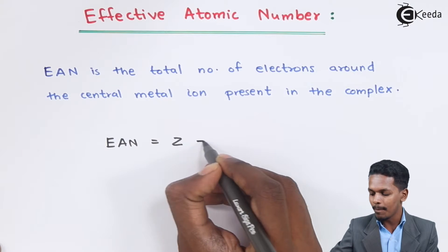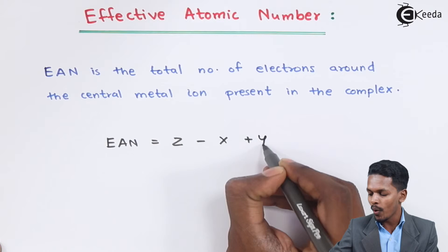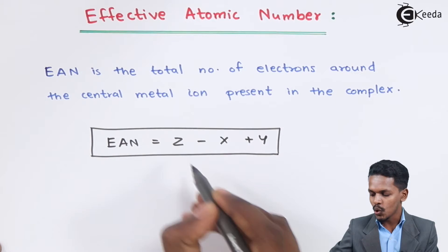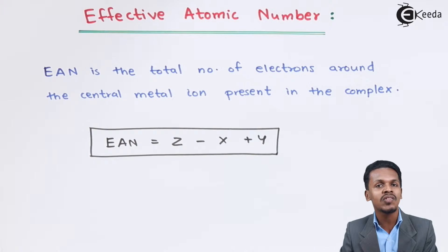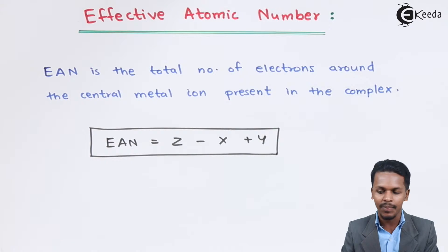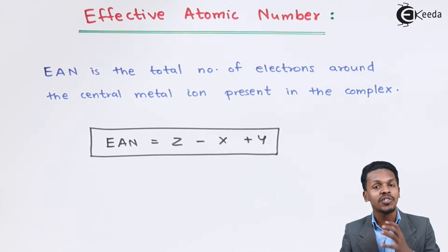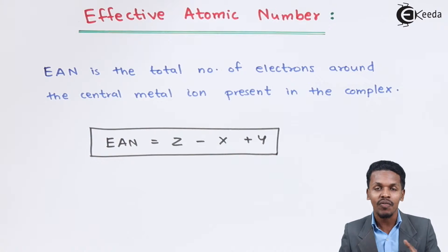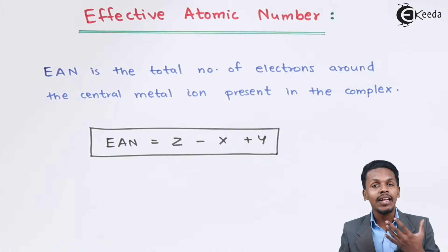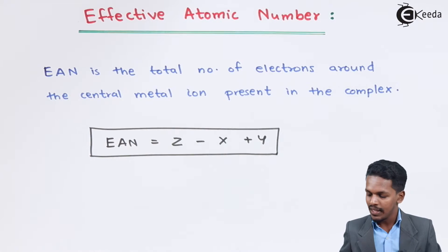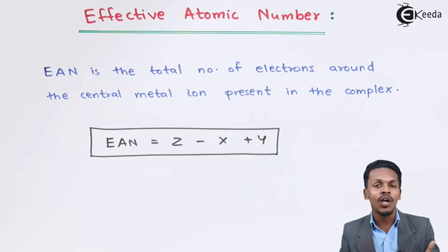The formula for EAN is: EAN = Z − X + Y. Here Z is the atomic number of the central metal atom, X is the oxidation number of the central metal atom when it loses electrons, and Y is the number of electrons shared by the ligands to the central metal atom.